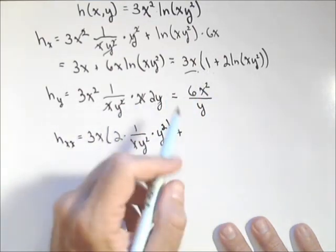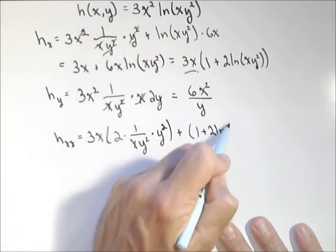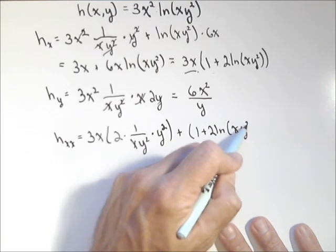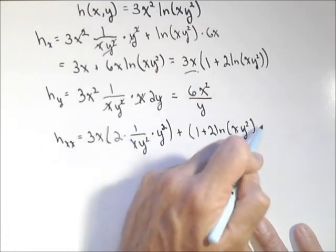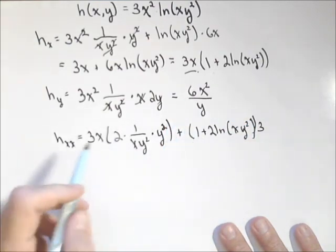Plus, now we're holding this part constant, times the derivative of that part. So one plus two ln of xy squared times three. And we've got our derivative.